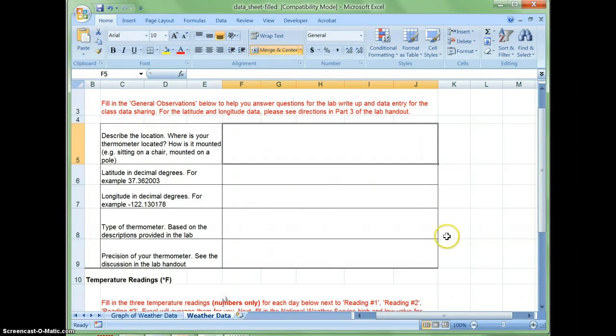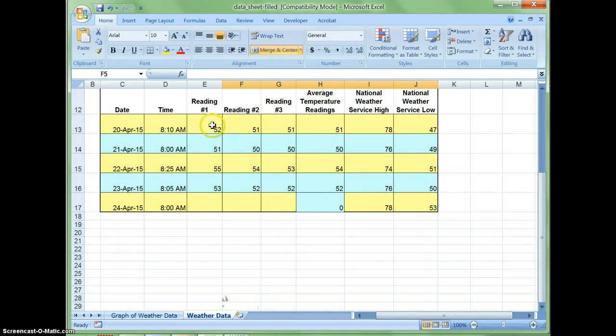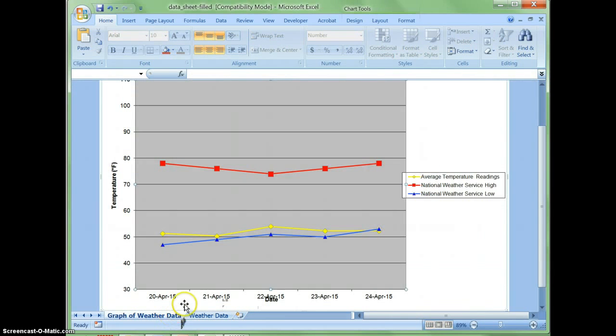Next, read the thermometer three times. I have already done this for one, two, three, four days, so we're on the fifth day. Enter your data. Notice that the software will automatically average the value for you. You can view a graph of your data and compare it to the National Weather Service data on the second tab.